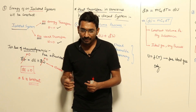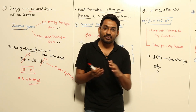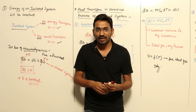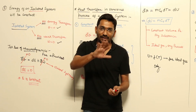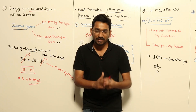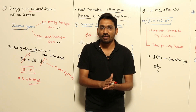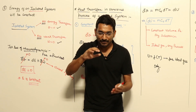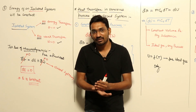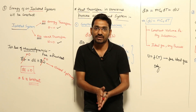We already studied the work transfer for various processes in a closed system. We have five processes: constant volume process, constant pressure process, adiabatic, isothermal, and polytropic. We already saw what is the work transfer in each of these processes in a closed system.